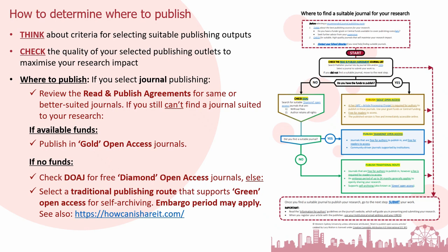For each of the journals on your shortlist, check if they are included in the Read and Publish Agreement journals or Central Funding journal publishers. Search by publisher, then by title or ISSN — the journal's unique identifier, which is particularly useful for finding a specific journal. The beauty of these Read and Publish Agreement journals is that your research is immediately open access and you retain the author rights to your work.